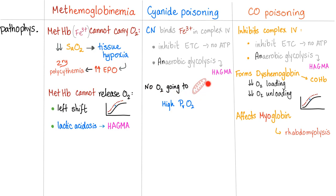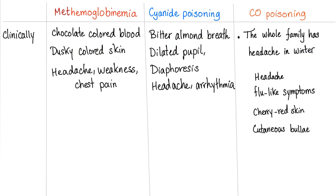In cyanide poisoning, no oxygen goes to the mitochondria, leading to increased oxygen in the veins — increasing PvO2. For CO poisoning: it inhibits Complex 4 similarly, leading to anaerobic metabolism and HAGMA. CO forms carboxyhemoglobin, decreasing oxygen loading and oxygen unloading. CO poisoning also affects hemoglobin and myoglobin, leading to atraumatic rhabdomyolysis, and of course shifts the curve to the left.